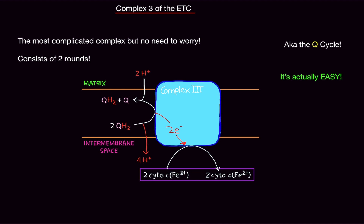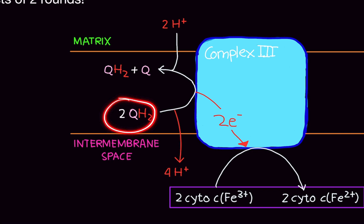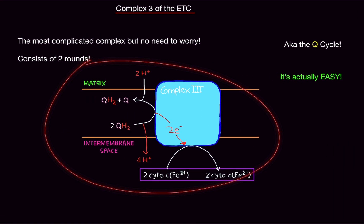So, we ended with Complex 2. And in Complex 2, we made ubiquinol. So, we are going to start with ubiquinol. So, this right here, don't worry about it, is an overview. Complex 3 consists of two rounds. And this is also called the Q cycle. So, anytime you see the Q cycle on a test or on the MCAT or whatever, it's talking about Complex 3.